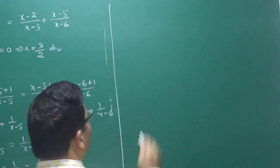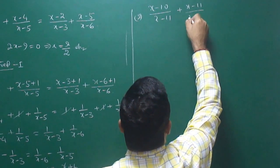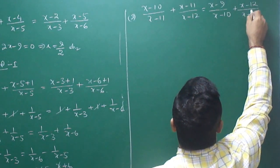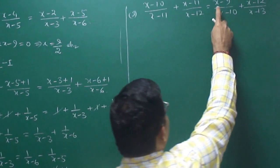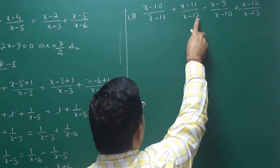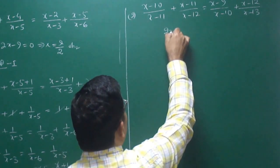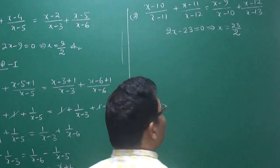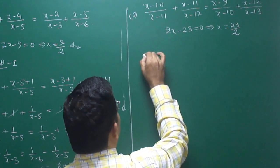Let us verify with another example. Consider: (x-10)/(x-11) + (x-11)/(x-12) = (x-9)/(x-10) + (x-12)/(x-13). Observe: the sum of numerators on the left is 2x-21, and here too the sum is 2x-21 (since 12+9=21). The sum of denominators on the left is 2x-23, and on the right also 2x-23. Set the denominator sum equal to zero: 2x-23 = 0, so x = 23/2.